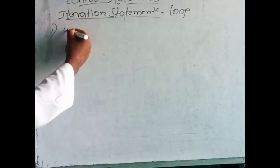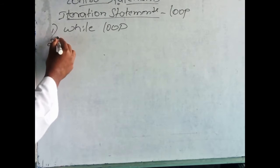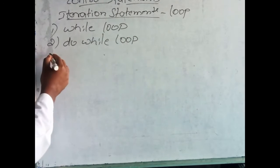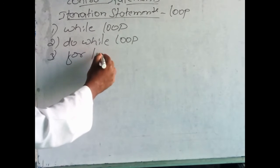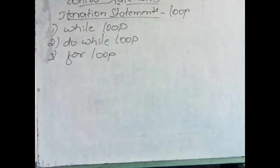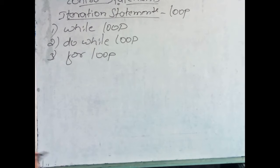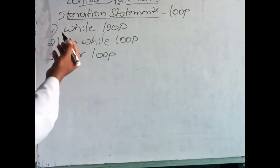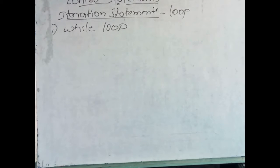There are three types of loop statements: one is the while loop, second is the do-while loop, and third is the for loop. A loop means executing a single statement or a set of statements more than one time repeatedly. Now we will see them one by one — while loop, do-while loop, and for loop.